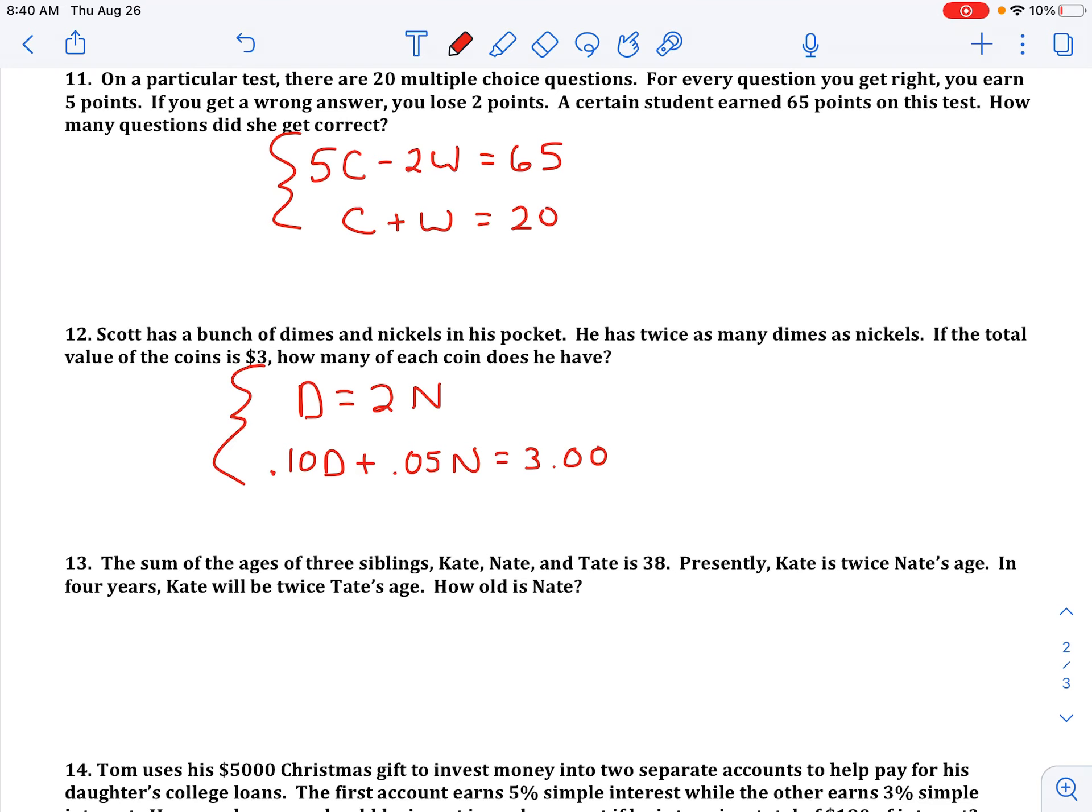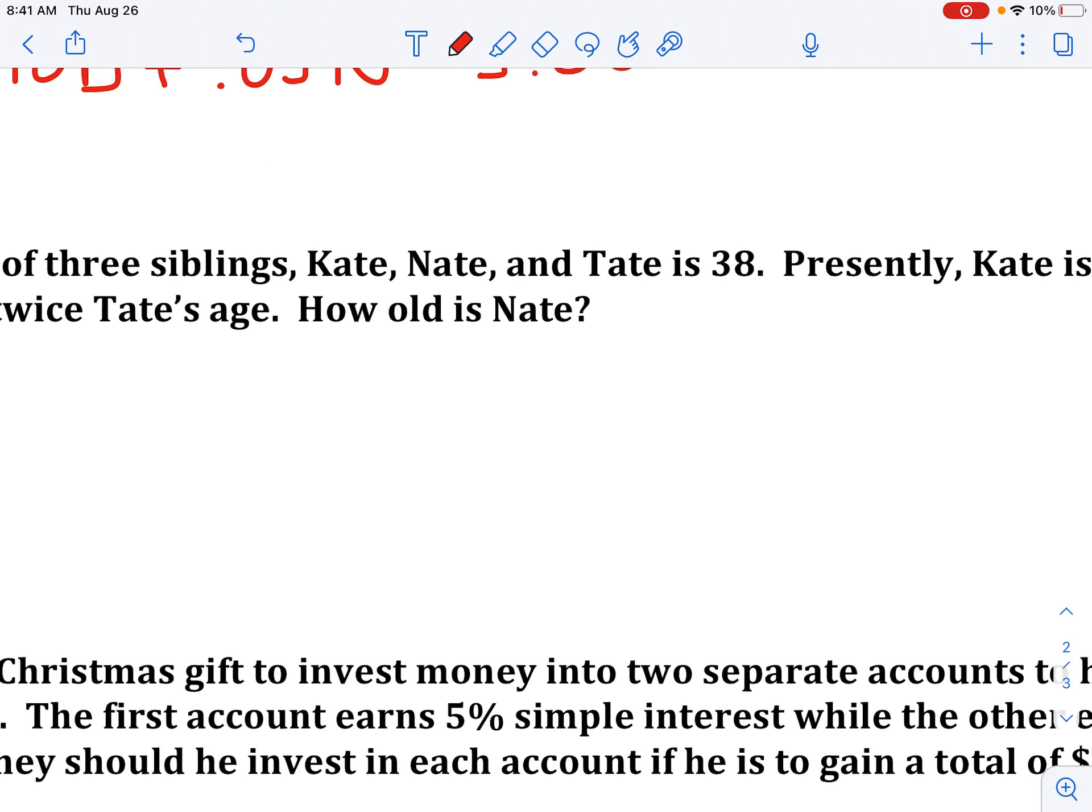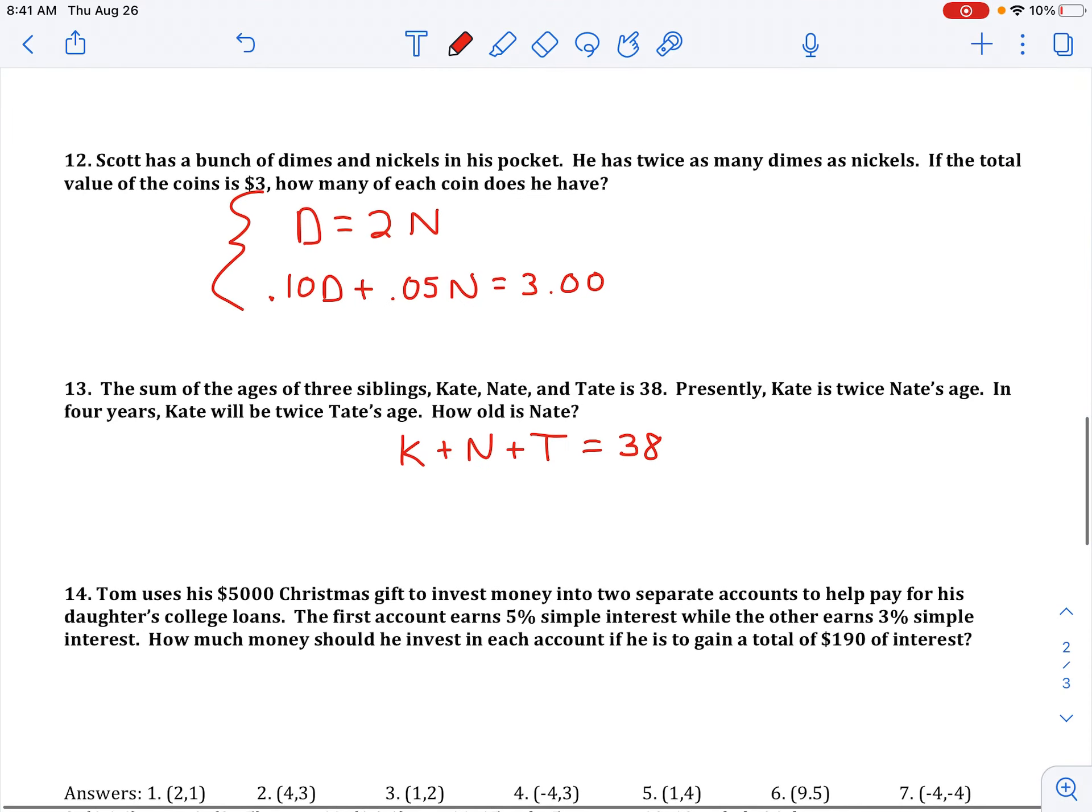Problem 13. We have the sum of the three siblings, Kate plus Nate plus Tate is 38. So Kate plus Nate plus Tate is 38. That's one equation. Now we have three unknowns, we're going to need three equations.